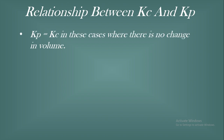First point: Kp is equal to Kc in cases where there is no change in volume. For example, if both sides of an equation have equal moles — like 2 on the product side and 1+1=2 on the reactant side — there is no change in moles, so Kp equals Kc.